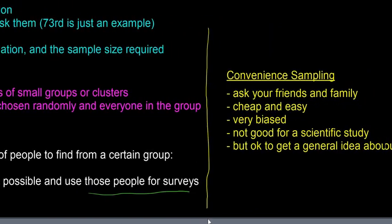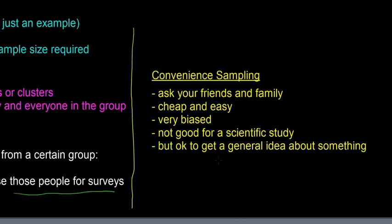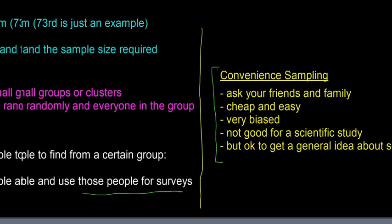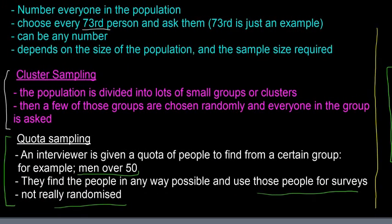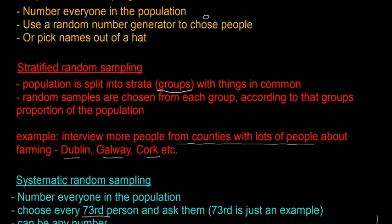The last one is called convenience sampling. Convenience sampling is basically just where you ask your friends and family. It's really cheap and really easy, but it's very, very biased, so you couldn't use it for a scientific study. It's good for maybe a small class project or if you just want to get a general idea about something before you pursue it further and do a proper study. Those are the different types of sampling — you need to know each one, the characteristics of it, and be able to come up with an advantage or a disadvantage for each.